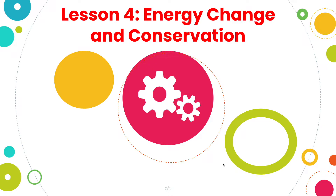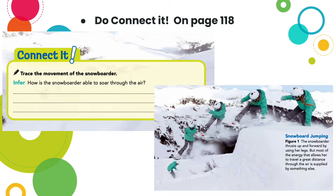Lesson four: energy change and conservation. On page 118 we're going to have you do the Connect It. You see a picture of a snowboarder going off a little jump. The first thing it tells you to do is trace the movement of the snowboarder — use an arrow to show how she's going. Think about the forces or the different types of energy we've talked about in this chapter. Why is the snowboarder able to soar through the air, and why is she coming back down? Pause the video to answer the Connect It on page 118.